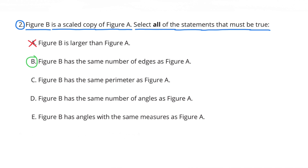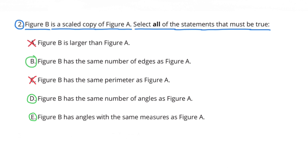I selected B because the shape wouldn't change — it would still have the same number of edges as figure A. I'm not selecting C, because figure B wouldn't have the same perimeter as figure A; the perimeter would either get larger or smaller. I am selecting D, because figure B will have the same number of angles as figure A. And I am selecting E, because the angles in scaled copies still have the same measure as the original figure.